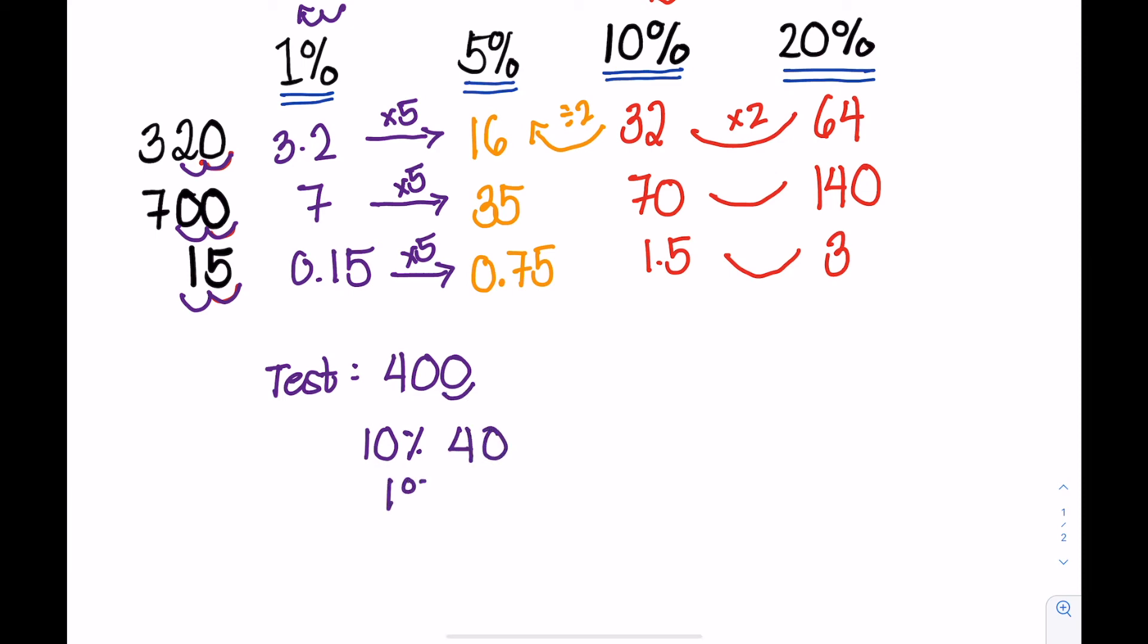The 1% is moving the decimal point twice, we have 4. And if you plan to get the 11%, we add the 10% and 1%, and that is 44.